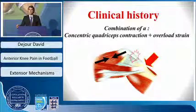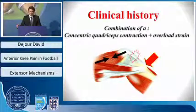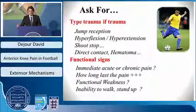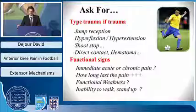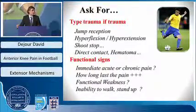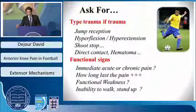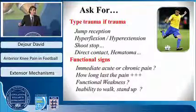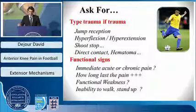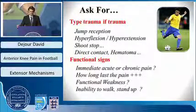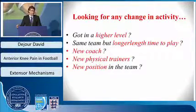The clinical history is mostly a combination of concentric quadriceps contraction plus somewhere an overload strain, and this will increase the pressure on your patella, on your tendon, on your muscles. Speaking to your patient, you have to ask some specific questions. If it's a trauma, how is the trauma? Is it a jump reception, hyperflexion, hyperextension? If you have a direct contact with a local hematoma. About the functional signs, you have to know if it's during or after the sports activity, if it's chronic, how long the pain lasts — which is really important in tendinitis — if they have some functional weakness.